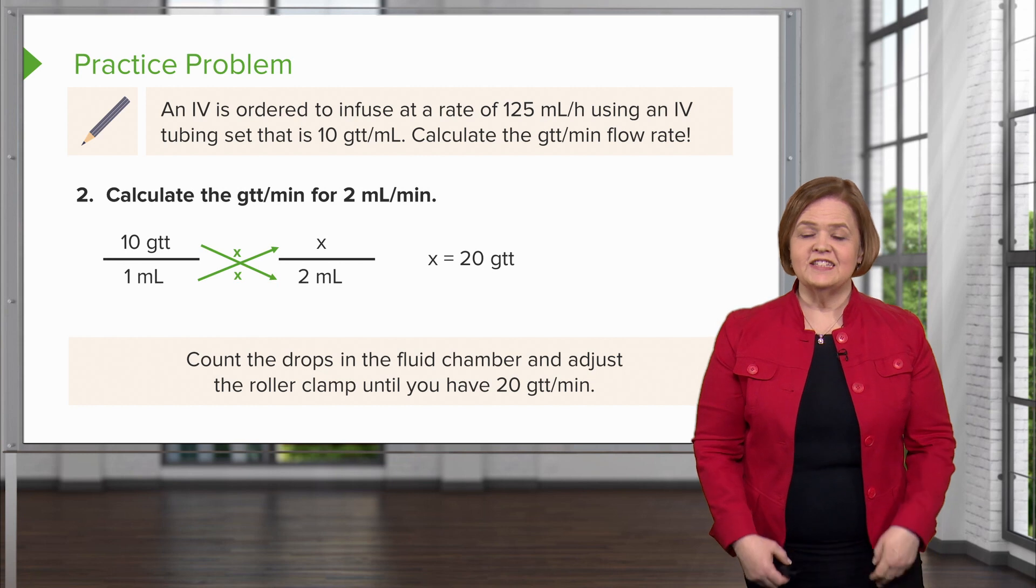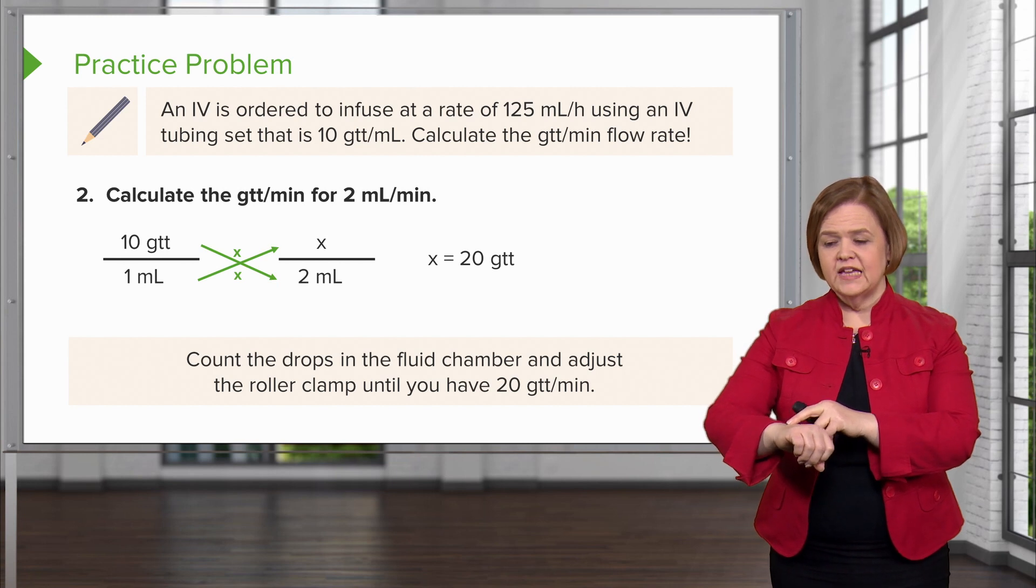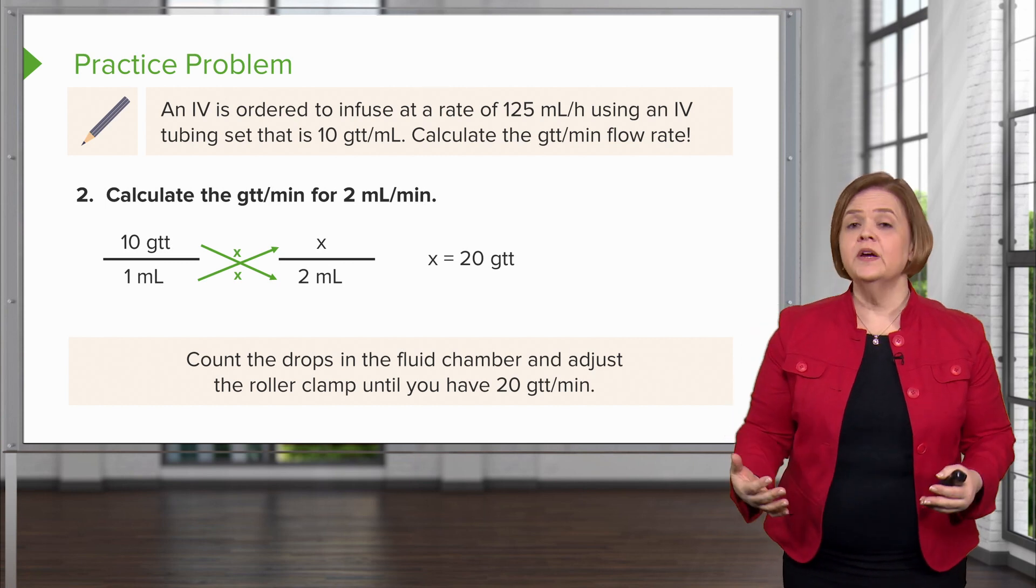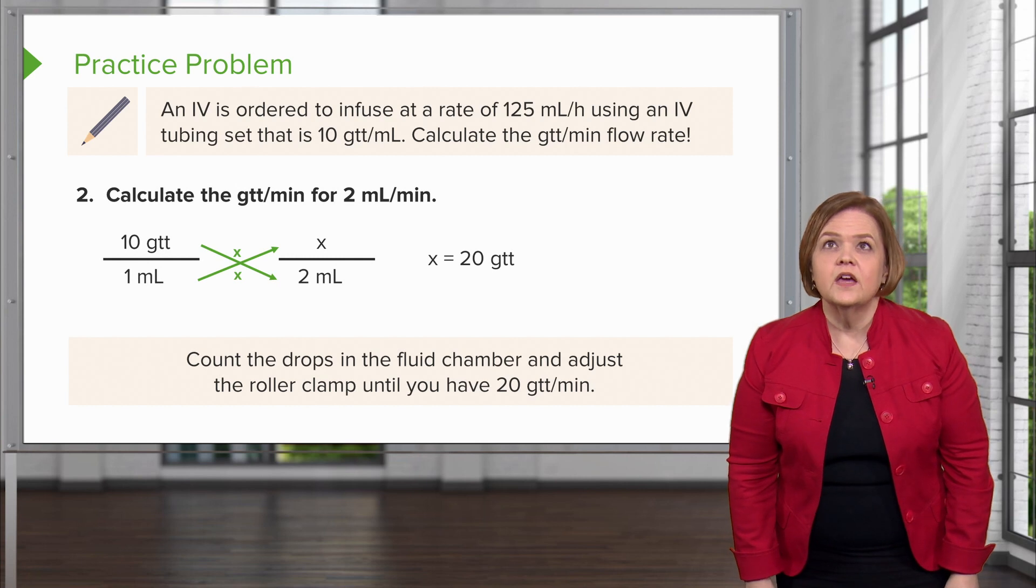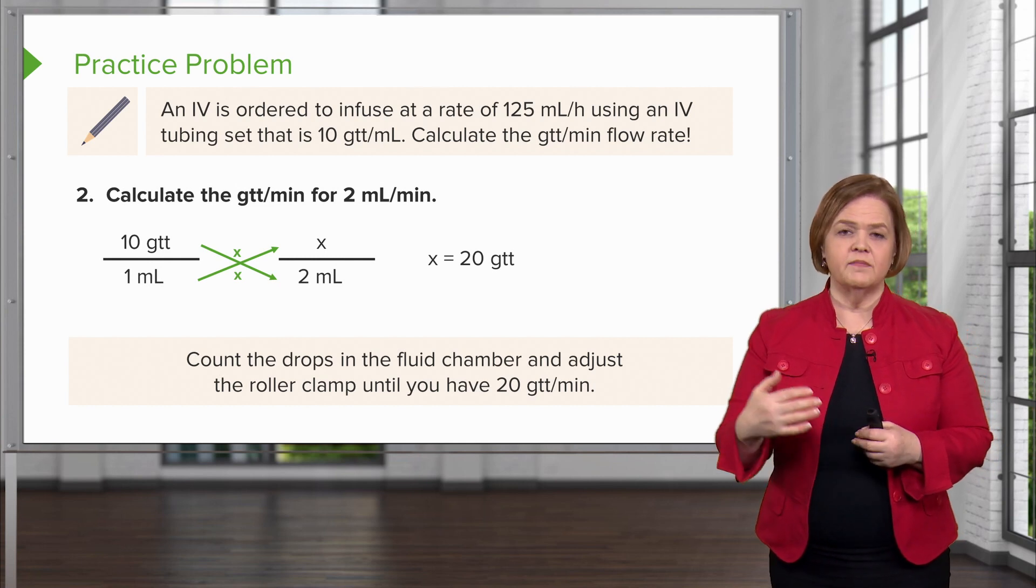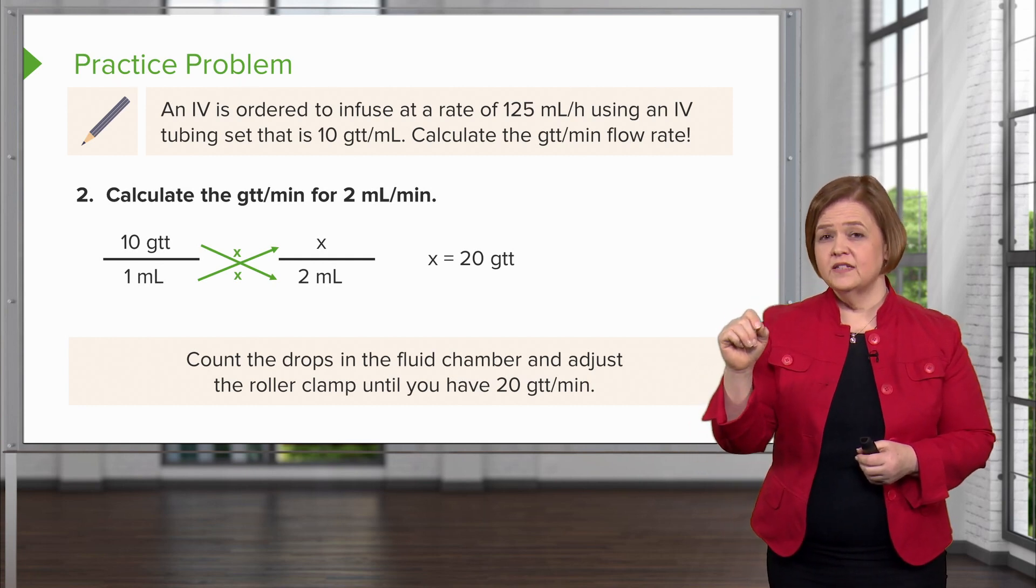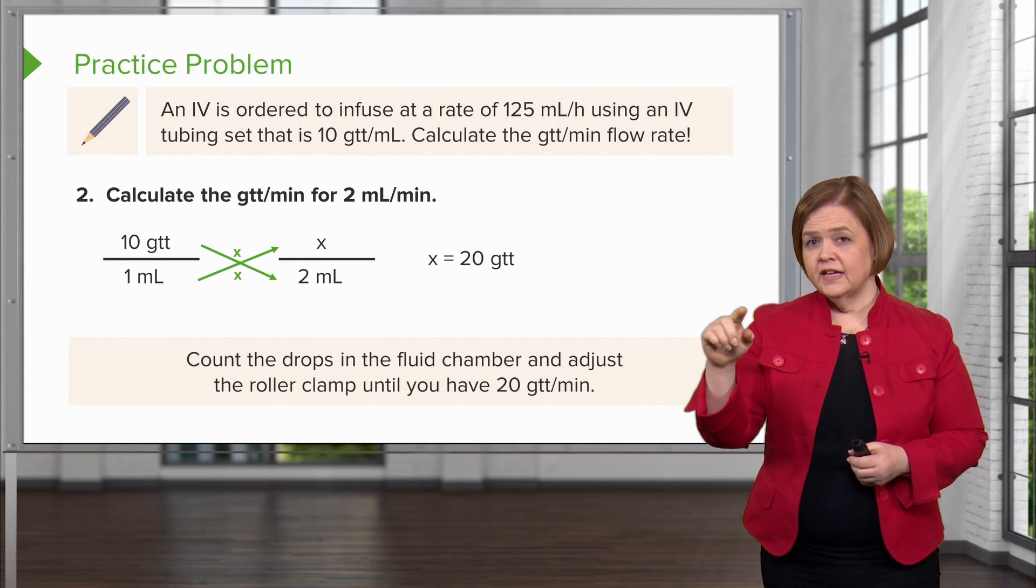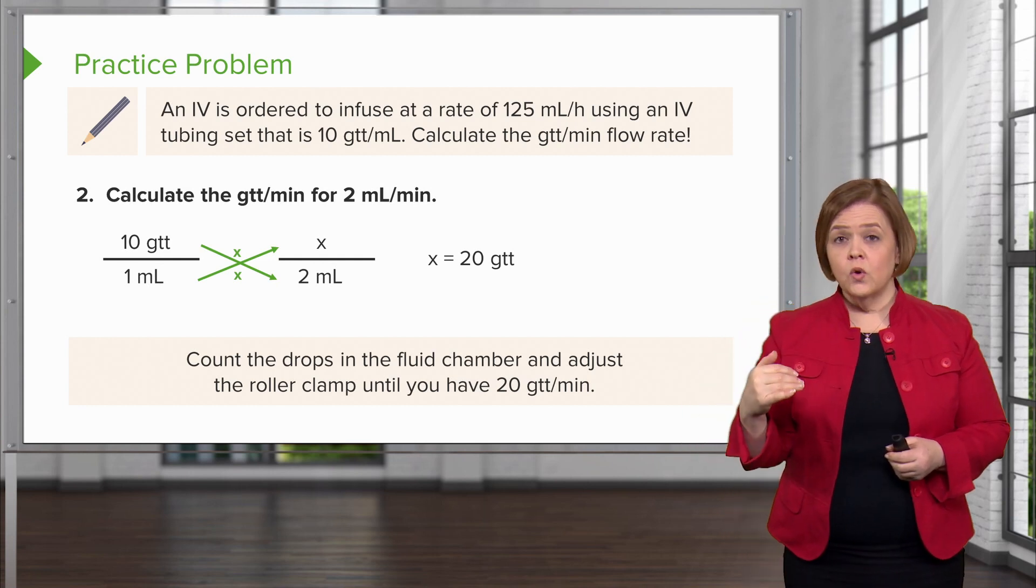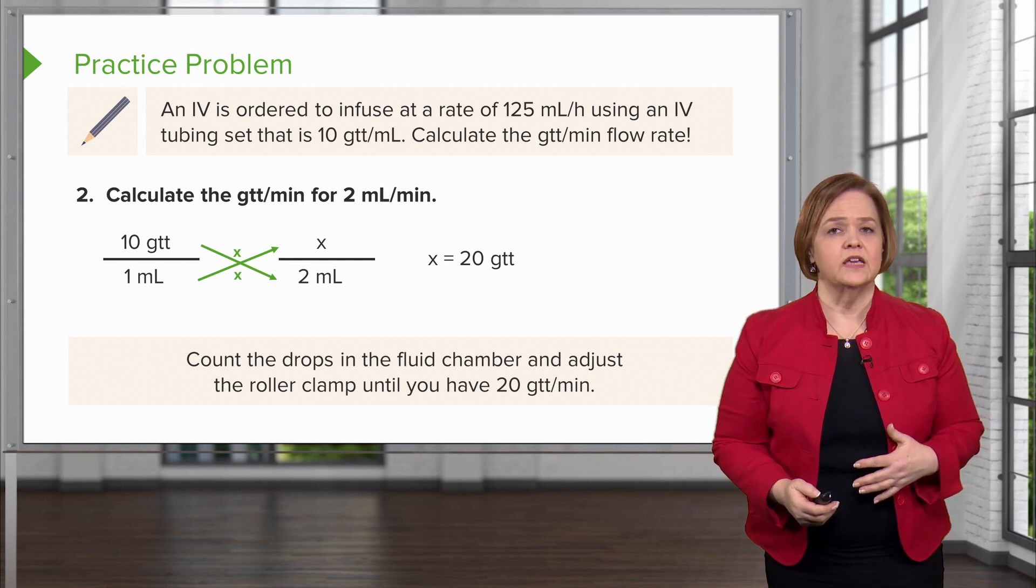Count the drops in the fluid chamber and adjust the roller clamp until you get 20 per minute. This takes practice - you'll need a watch with a second hand and dexterity with the roller clamp. Don't stand there for 60 seconds counting drops. Instead, count for 15 or 20 seconds and multiply by 4 or 3. That tells you your rate per minute. Our goal is to adjust the chamber to 20 drops per minute to achieve 125 milliliters in an hour.